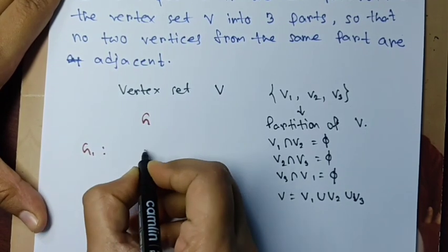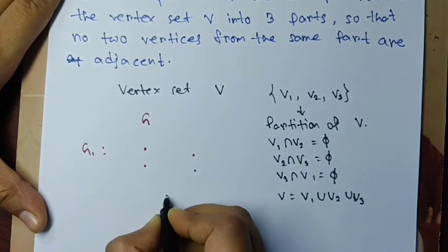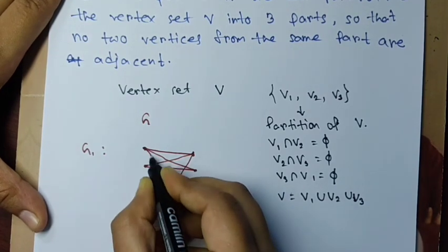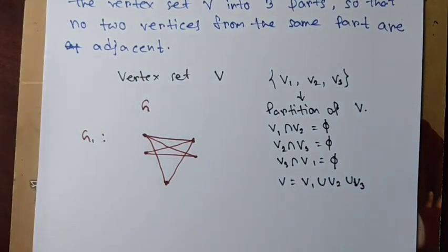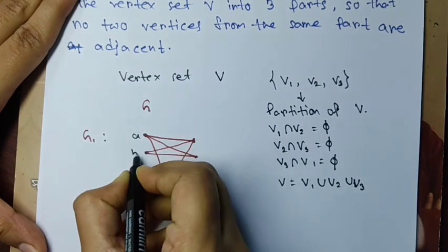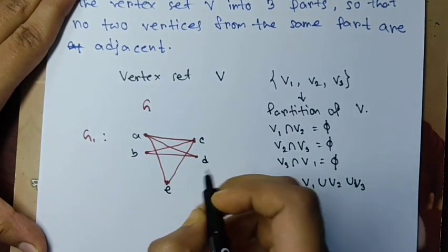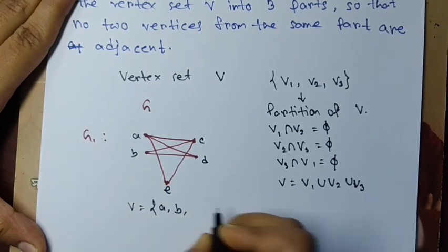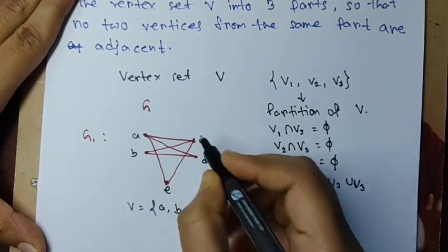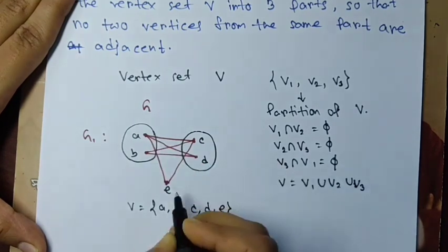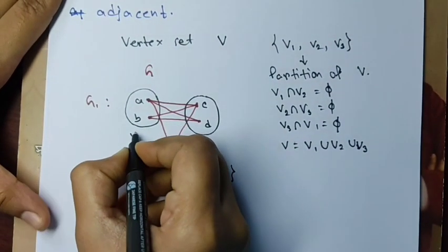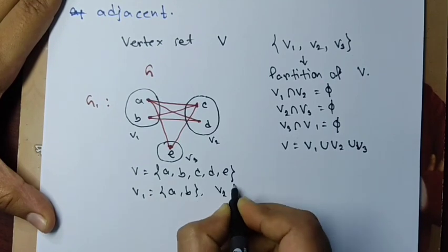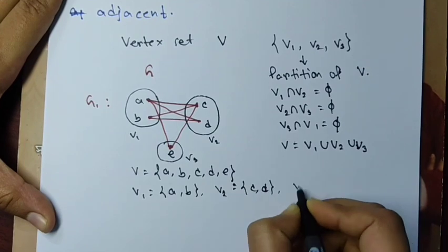Let's take an example. Consider graph G1. The vertex set has vertices a, b, c, d, and e. We can partition the vertex set into three parts: V1, V2, and V3. V1 contains a and b, V2 contains c and d, and V3 is the singleton {e}.